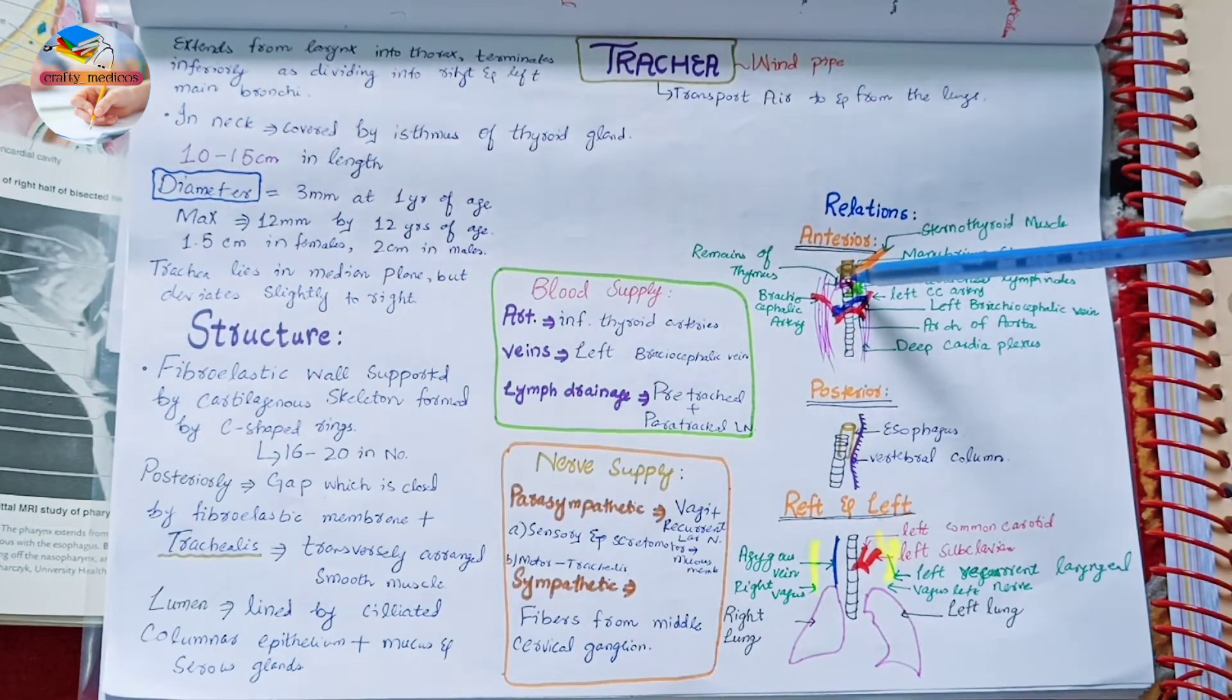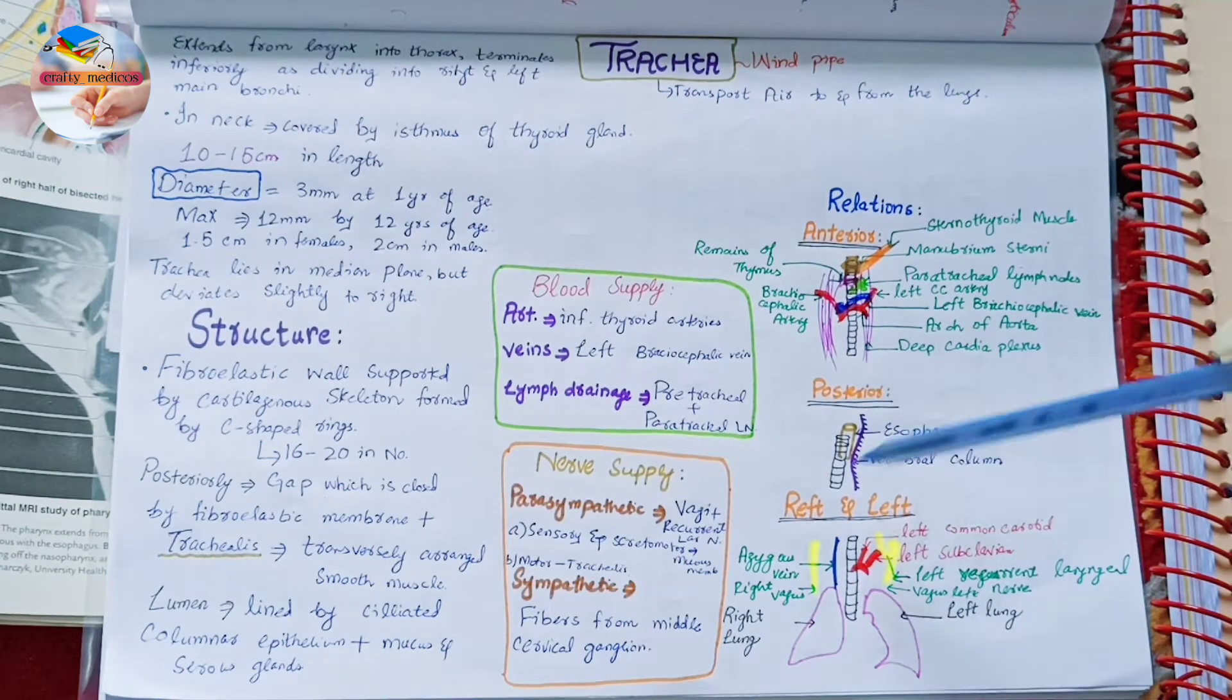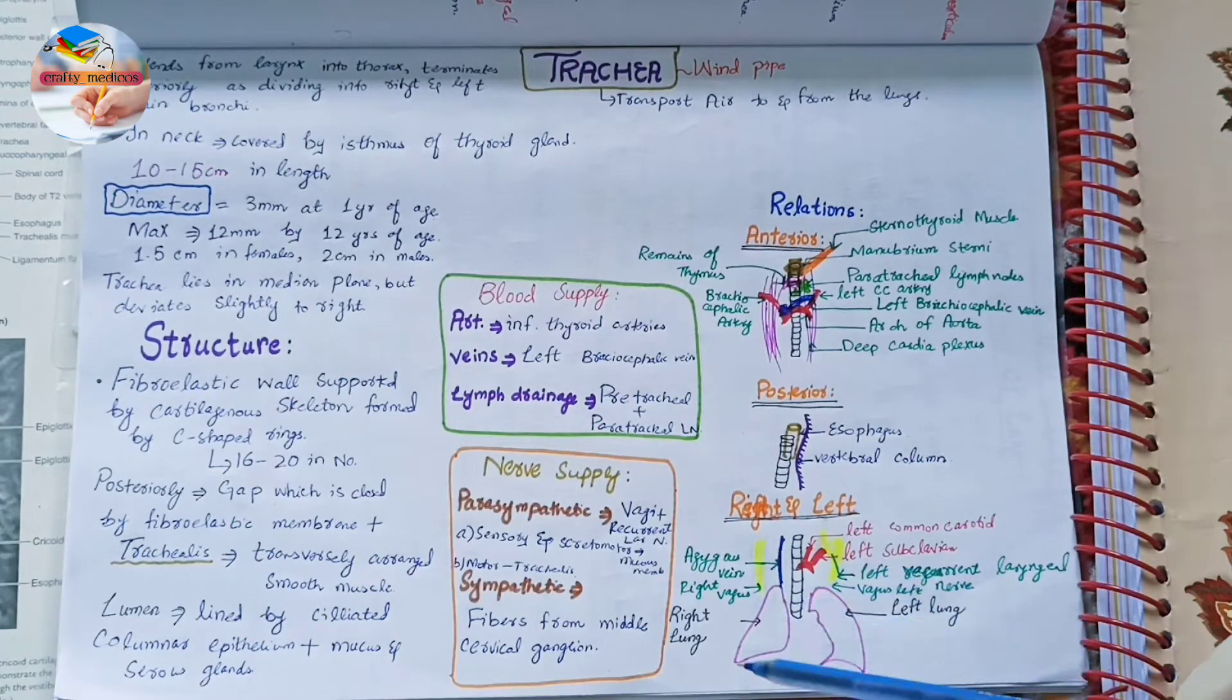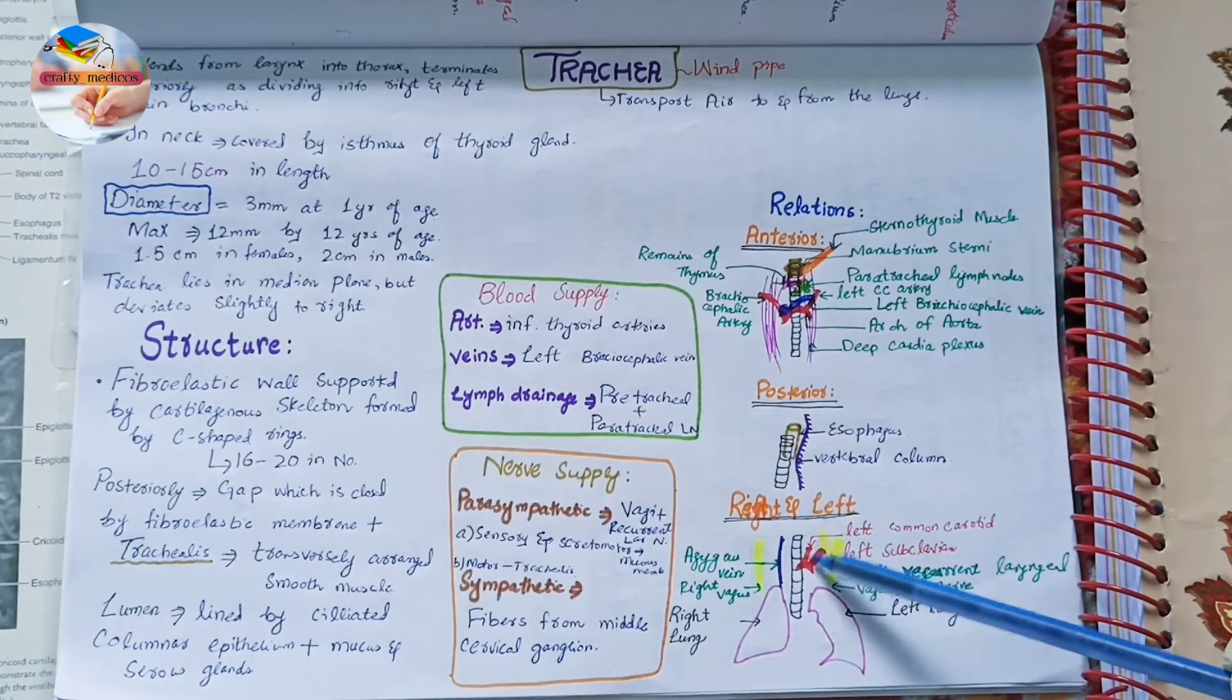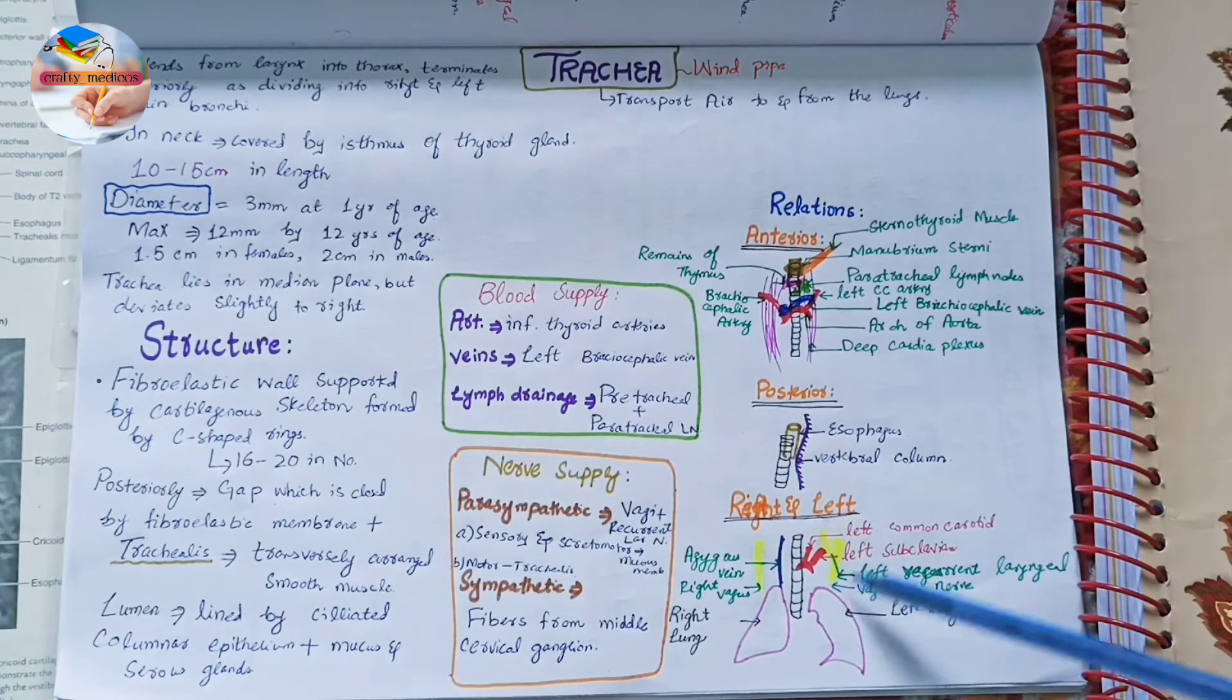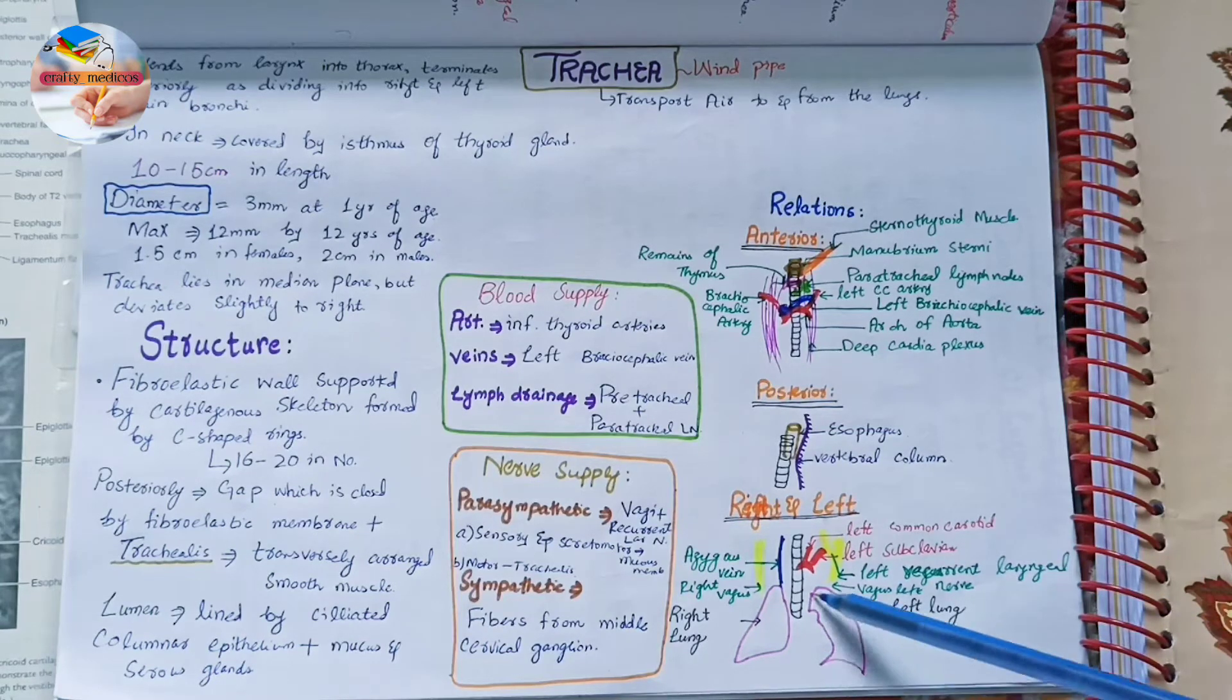Posteriorly it is related to the esophagus and vertebral column. To the right it is related to the azygous vein, right vagus, and right lung with its pleura. To the left it is related to the left common carotid artery, left subclavian artery, left vagus nerve, and the left recurrent laryngeal nerve as well as the left lung with its pleura.